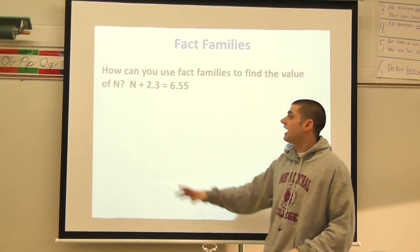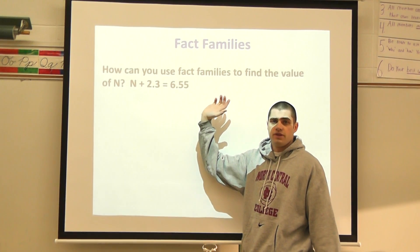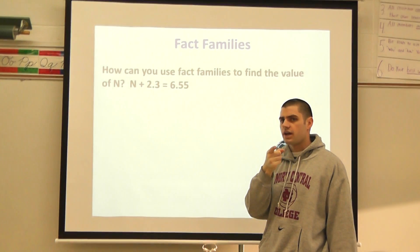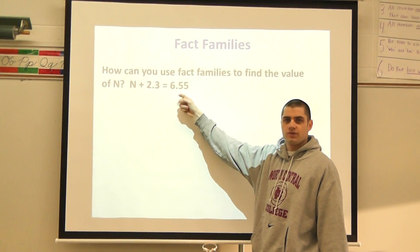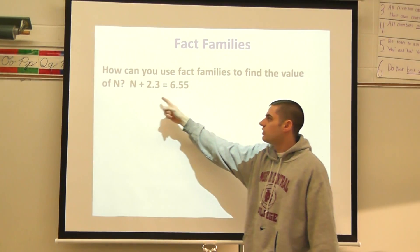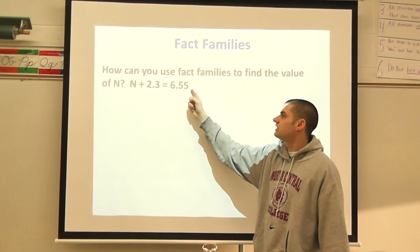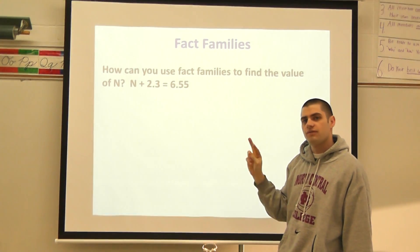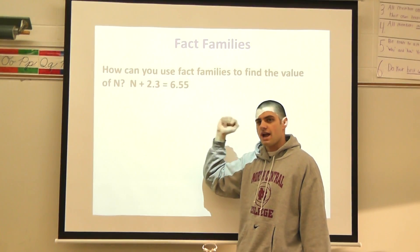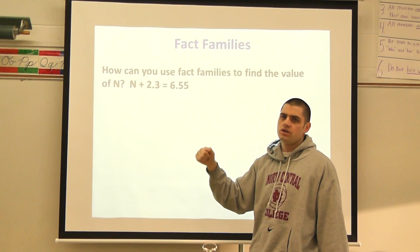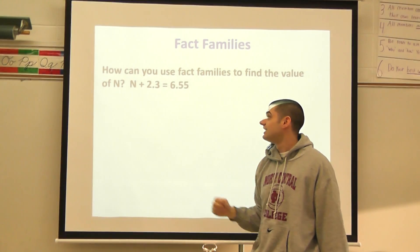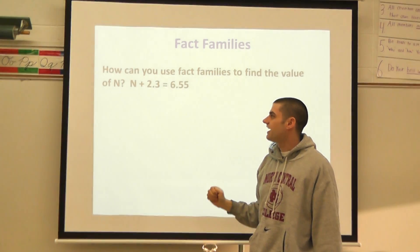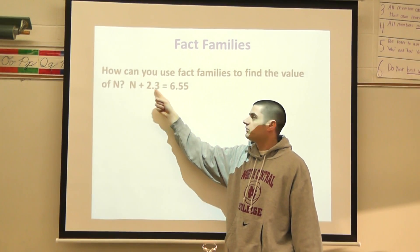Kind of re-rack your brain here. Think about some of the information you guys have worked with already this year. I know that in an addition problem the biggest number goes where? Oh yeah, the biggest number in this problem goes at the end. So I know this number has to be smaller than our 6.55. So I can actually use the inverse here and use a subtraction problem.